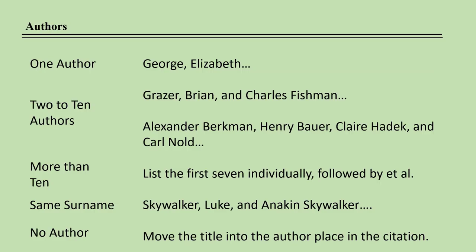In a Chicago style footnote, the author's name is written as it is said, first name first. However, the bibliography is organized alphabetically by author's last name. So in the bibliographic citation, the author's last name is listed first, followed by a comma, and then the first name, and a period. Periods separate pieces of information in bibliographic citations, whereas commas separate pieces of information in the footnote citation.